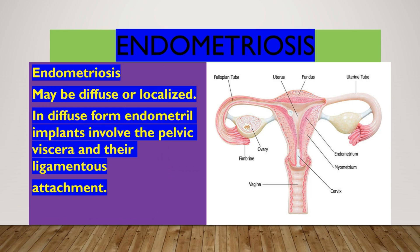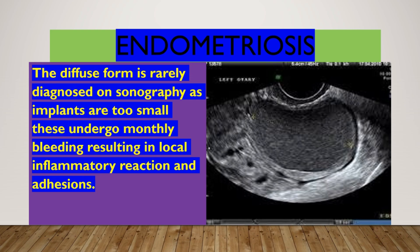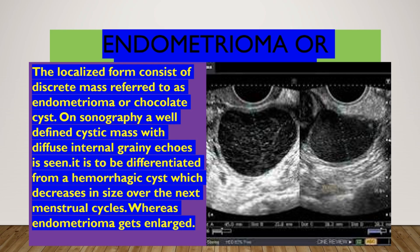Endometriosis may be diffuse or localized. In the diffuse form, endometrial implants involve the pelvic viscera and their ligamentous attachments. The diffuse form is rarely diagnosed on sonography, as implants are too small. They undergo monthly bleeding, resulting in local inflammatory reaction and adhesions.